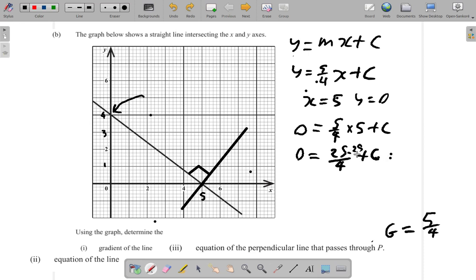If you minus 25 over 4 from here, you get C equals. And you minus 25 over 4 from here, you get negative 25 over 4, right?